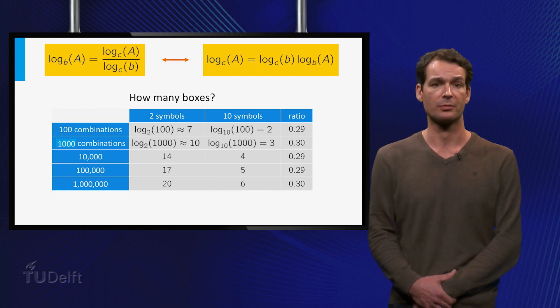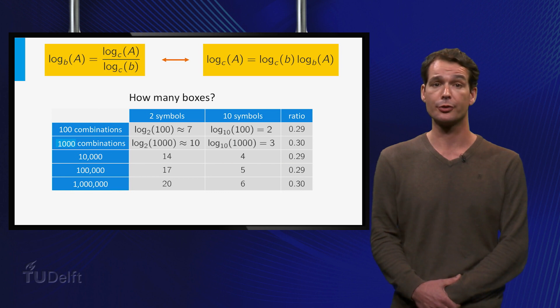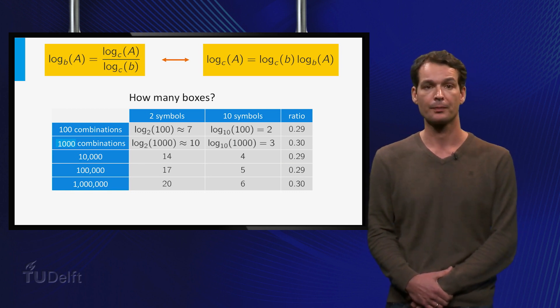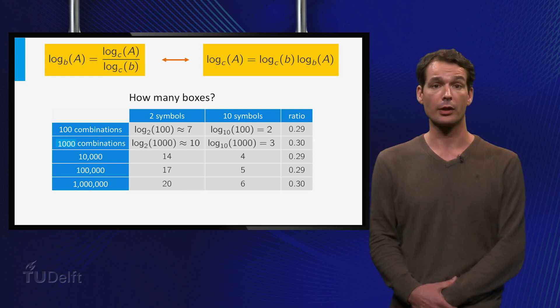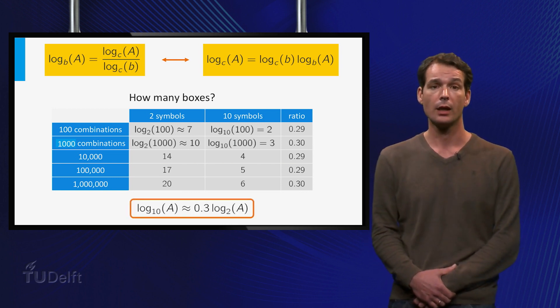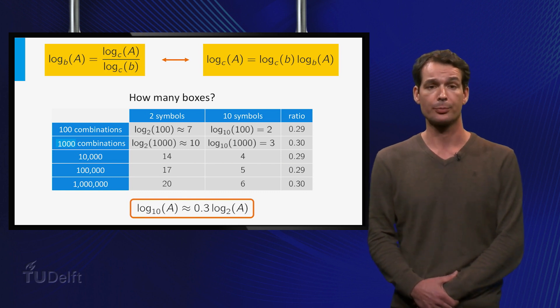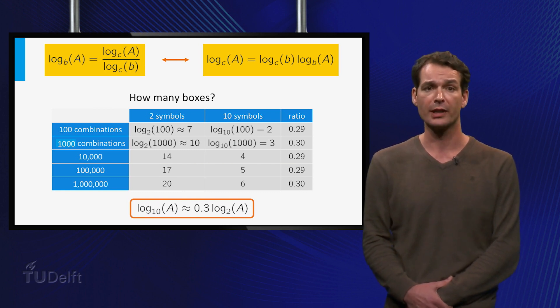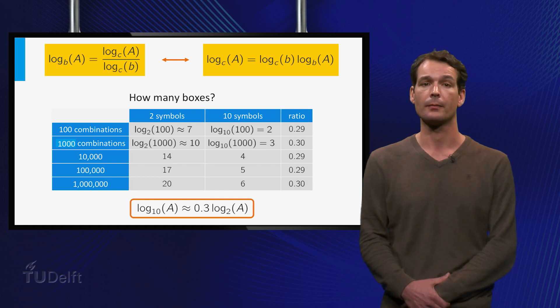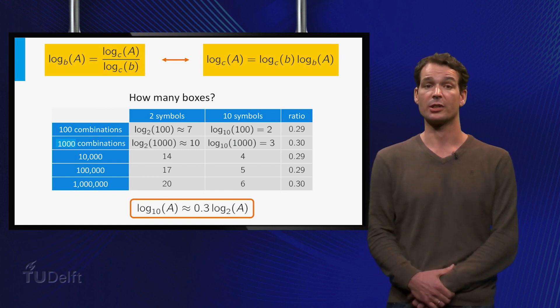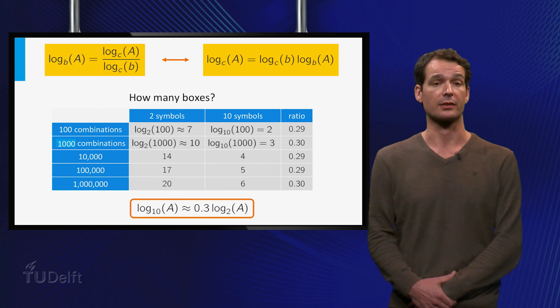What does this tell us about logarithms? Well, the first number on the left is the log in base 2 of the number of combinations that we want. Actually we rounded it up because the number of combinations that we chose is not the power of 2. The number on the right is the log in base 10 of the number of combinations. So we have the formula log base 10 of A is approximately equal to 0.3 times log base 2 of A which says that logarithms in base 10 and base 2 differ by a constant factor.